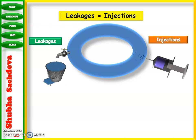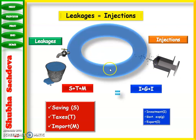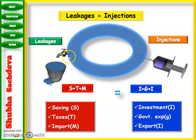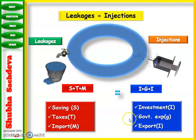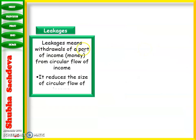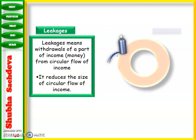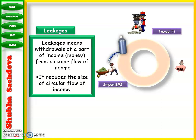Leakage and injection is a new topic. Leakage means withdrawal from the circular flow, and injection means addition into it. The acronym STM stands for Savings, Taxes, and Imports — these are leakages. If we save money, that money is out of our economy. Taxes take money out of our economy. If we import, money goes out of our economy. Leakage refers to the withdrawal of a part of income or money from the circular flow of income, which reduces the size of the circular flow.